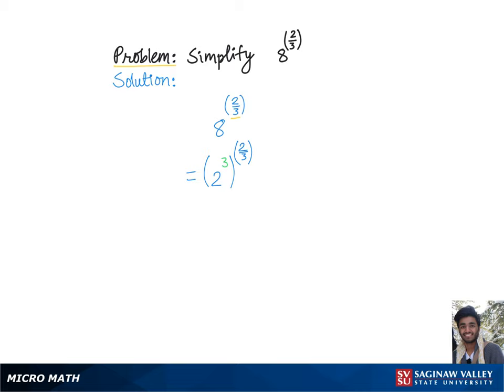Now we'll further simplify this using the rule of exponents according to which we'll basically multiply the exponents. So we'll get 2 raised to the 3 times 2 thirds.